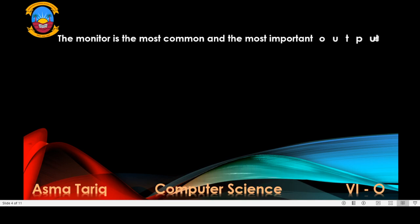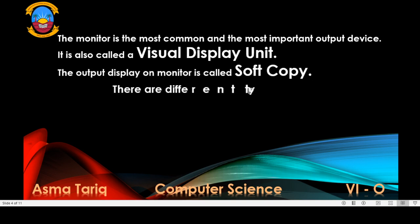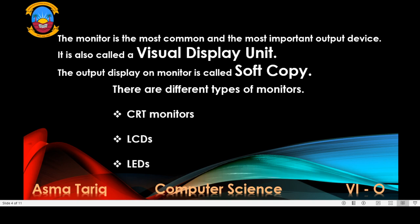The monitor is the most common and most important output device. It is also called a Visual Display Unit. The output displayed on a monitor is called a soft copy. There are different types of monitors: CRT monitors, LCDs, and LEDs.